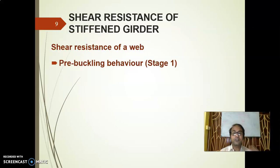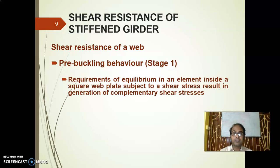Shear resistance of a stiffened girder - we are discussing welded plate girders where the shear resistance is taken by the plate girder. Pre-buckling behavior, stage one: when the buckling is just at the verge of starting.